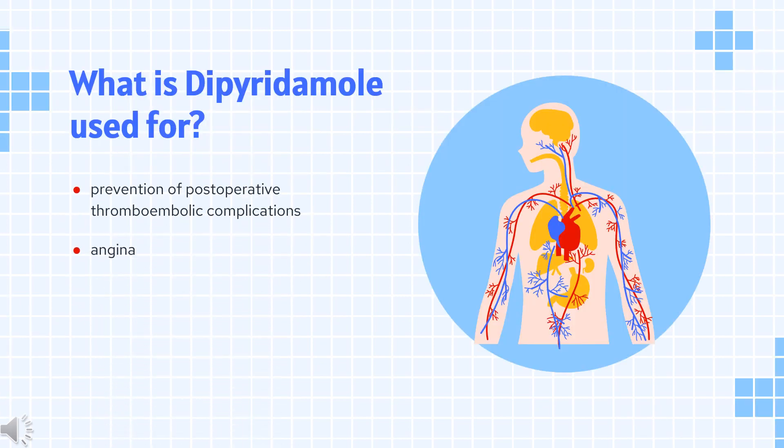What is dipyridamol used for? It is used as an adjunct to coumarin anticoagulants in the prevention of postoperative thromboembolic complications of cardiac valve replacement, and also used in prevention of angina.